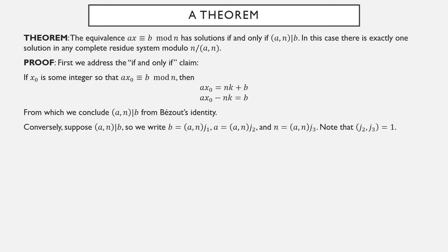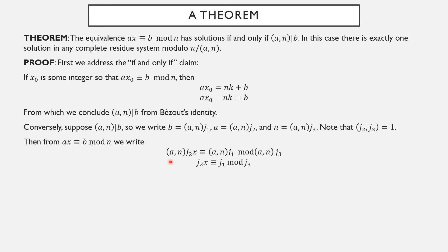From the original equation ax ≡ b mod n, we can write GCD · j₂ · x ≡ b modulo n. There is a shared factor of the GCD in all terms, so we can cancel it from the modular equivalence as long as we also divide the base by the GCD of that factor and n. Since the GCD is already a factor of n, it cancels out directly. So we get a new modular equivalence j₂ · x ≡ j₁ modulo j₃, with the additional information that j₂ and j₃ are relatively prime. Since j₂ and j₃ are relatively prime, we can multiply by j₂ inverse modulo j₃ and solve for x.